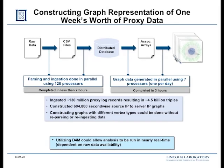That is the power of D4M — it allows you to do correlations on this kind of data the same way we do correlations using traditional linear algebra. Correlations allow us to determine the background and clutter of our data, and then we're on our way with traditional detection theory and signal processing. This shows the whole result: a whole week's worth of proxy data, about two hours to ingest it and three hours to do this processing — 100 million proxy logs, 44.5 billion triples. This is truly big data.